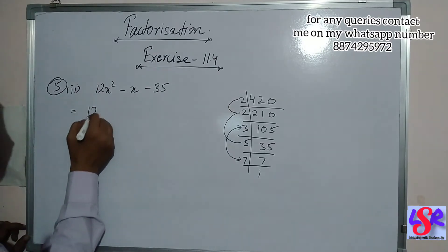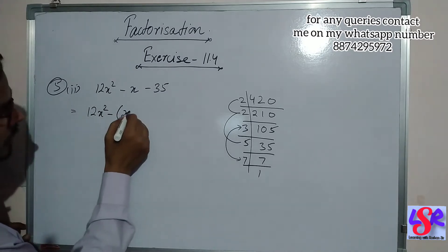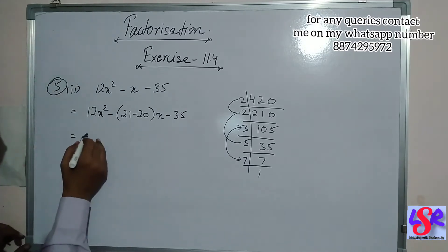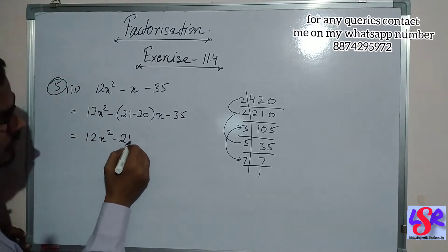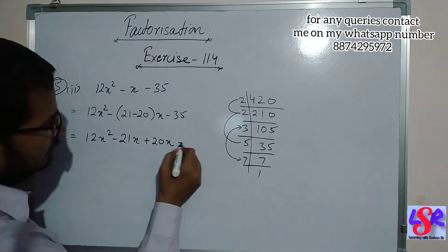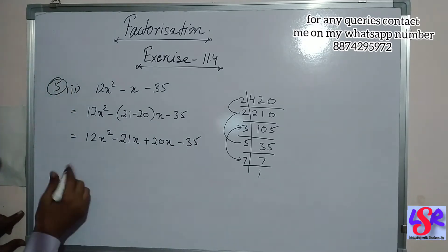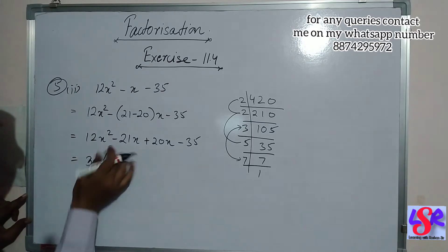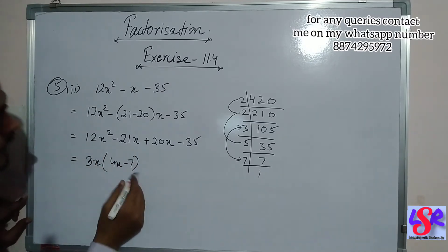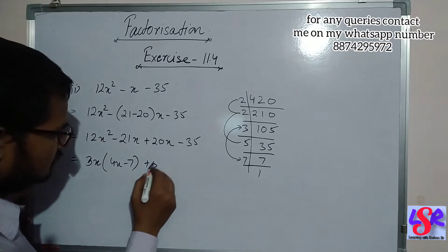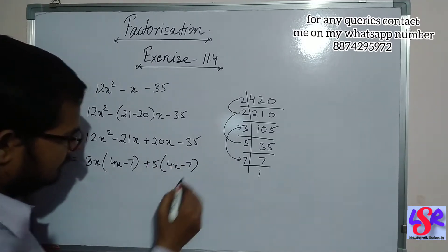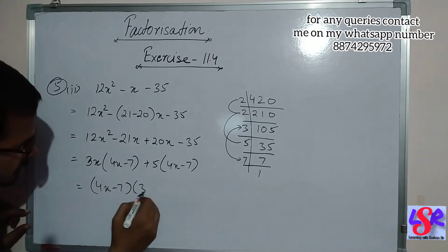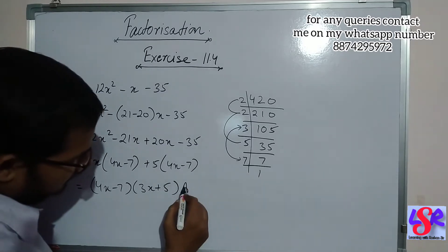So we write this as 12x square minus 21x minus 20x minus 35. Opening the bracket: 12x square minus 21x plus 20x minus 35. Taking 3x common from the first two gives 4x minus 7, and taking plus 5 common from the last two also gives 4x minus 7. Taking 4x minus 7 as common, the answer is 4x minus 7 into 3x plus 5.